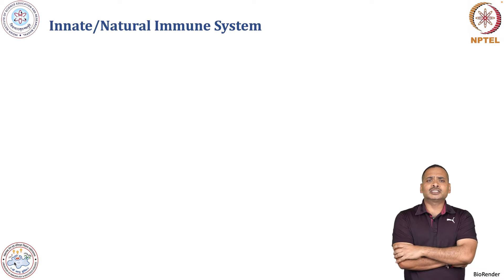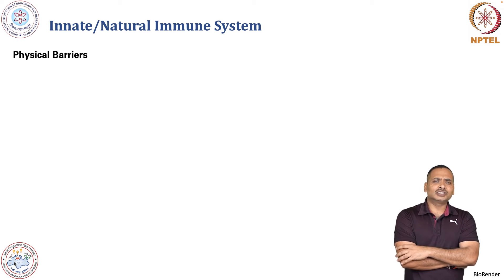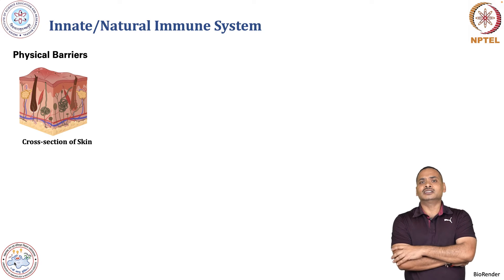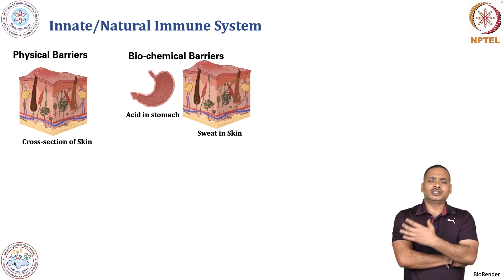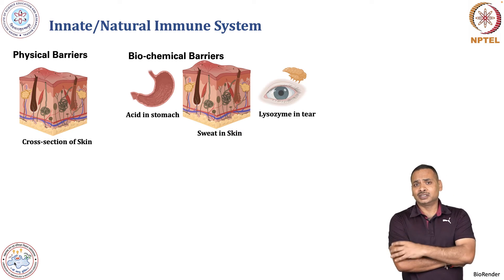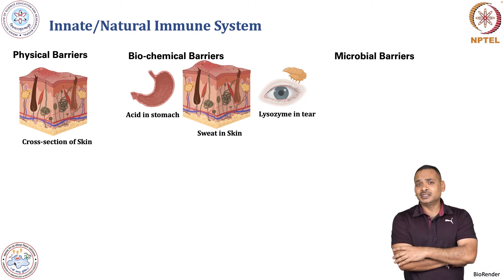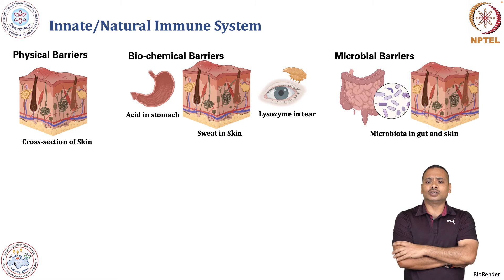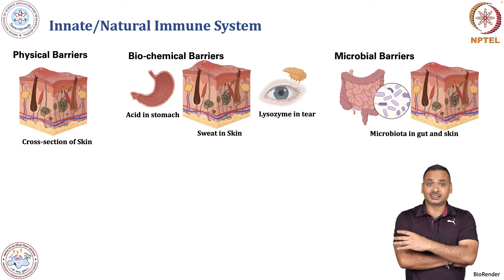Then I will discuss about innate immunity, which is also known as natural immunity or the natural immune system, which consists of physical barriers. Here you can see there is skin, there is a biochemical barrier consisting of acid in the stomach, sweat or sebaceous secretions in skin, and lysozyme secreted in tears in the eyes. There is also a microbial barrier which basically consists of microbiota present in our gut and also present in skin.